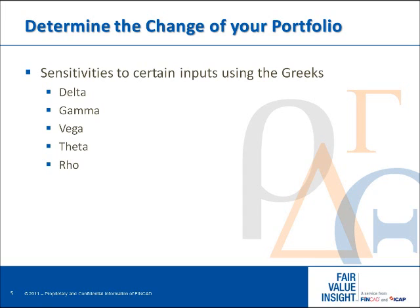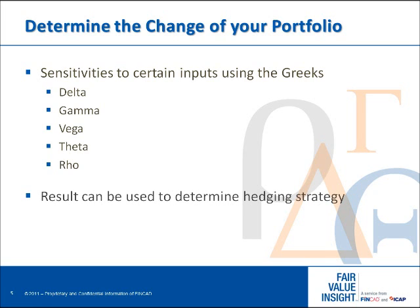For example, many of you may have heard the term 'the Greeks' when it comes to your option portfolio. The Greeks — delta, gamma, vega, theta, and rho — are sensitivities to certain inputs that determine the change in the resulting output. The results of your analysis can be used to directly determine hedging strategies.